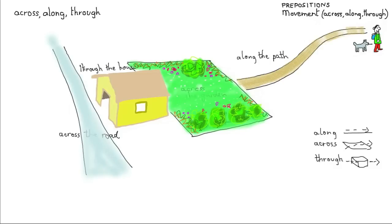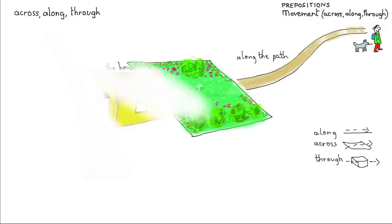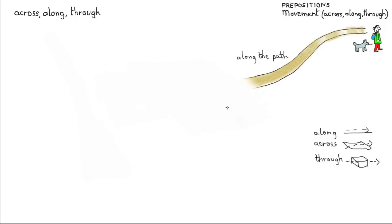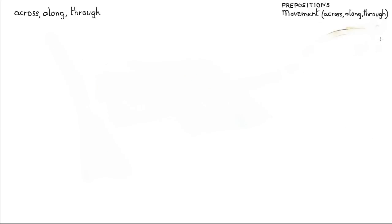Right, now it's time for the test. I'll rub all this out and put 'test' up the top. I've got a little passage with five blanks and three items to put in. You can guess what the items are — it's not difficult. So I'll write the three options at the top: across, along and through.